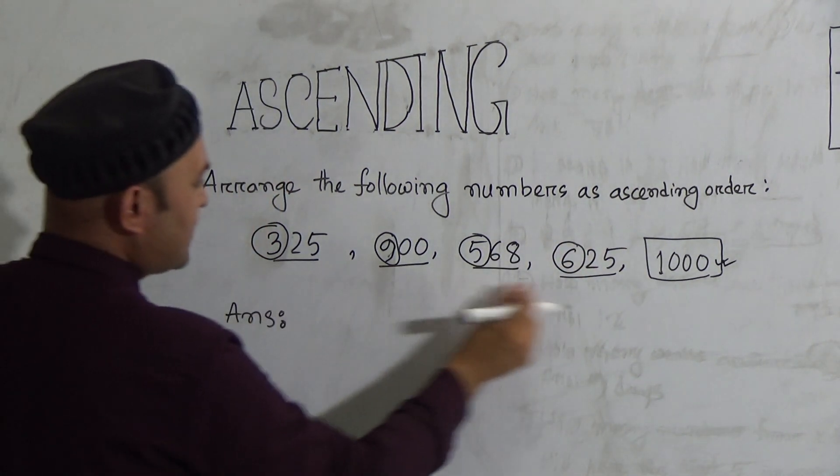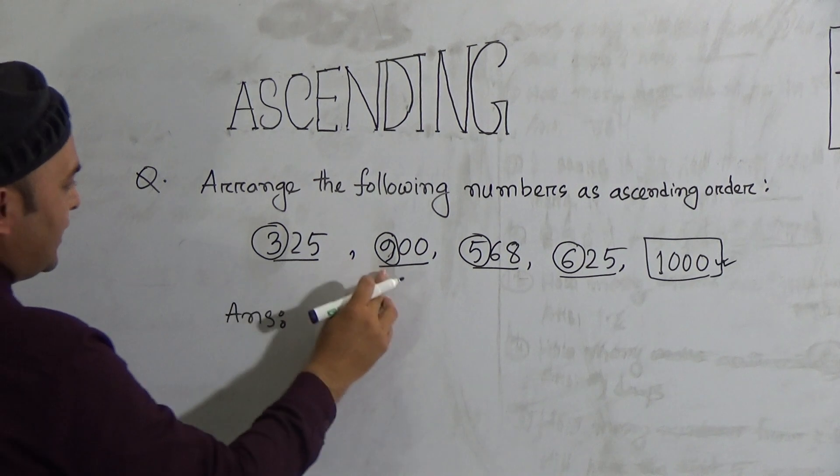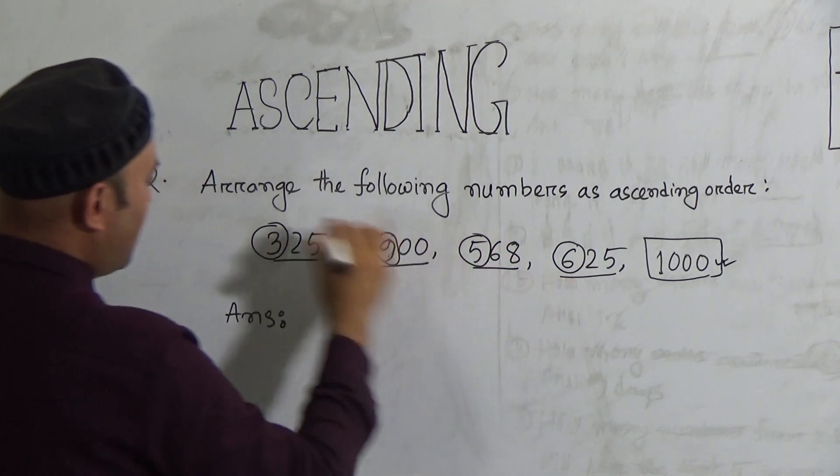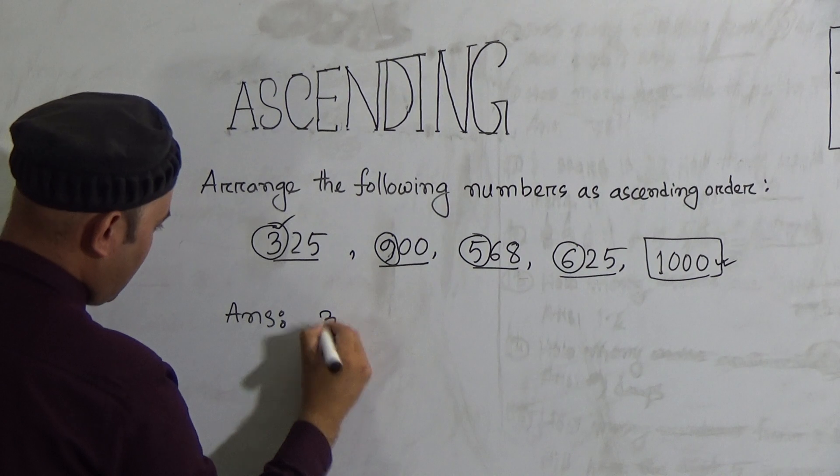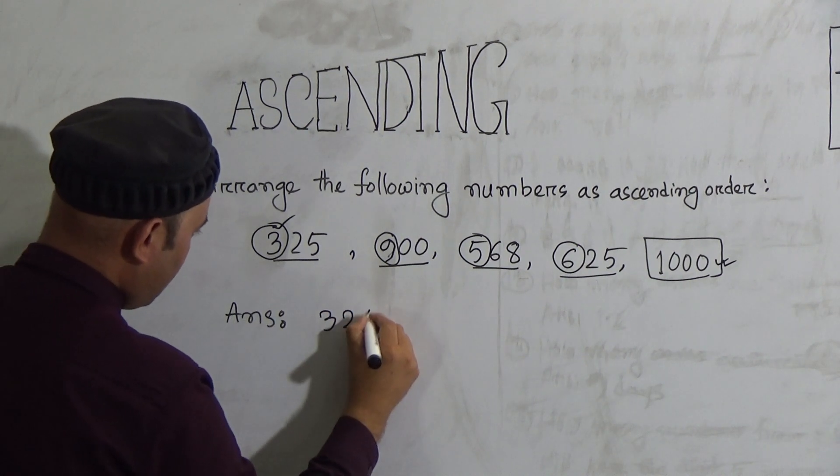So which one is smallest among them? 3, 9, 5, 6. Yes, it is 3. So the first number will be 325.